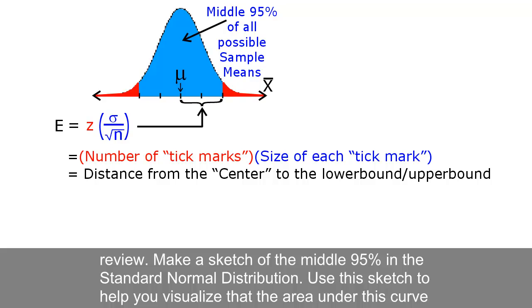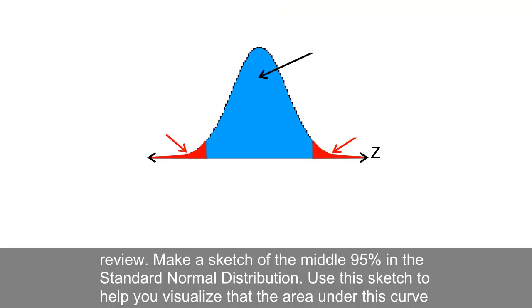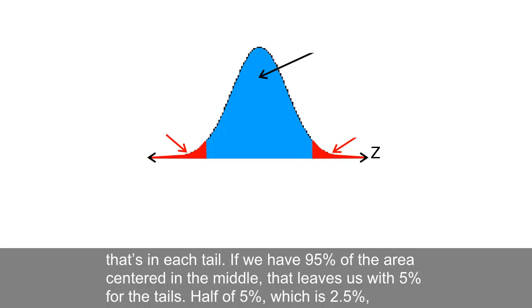Make a sketch of the middle 95% in the standard normal distribution. Use this sketch to help you visualize the area under this curve that's in each tail. If we have 95% of the area centered in the middle,